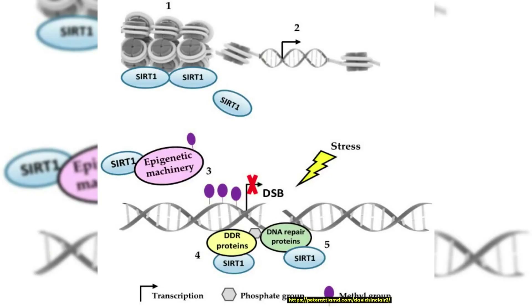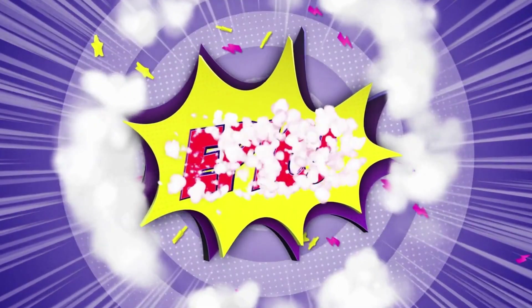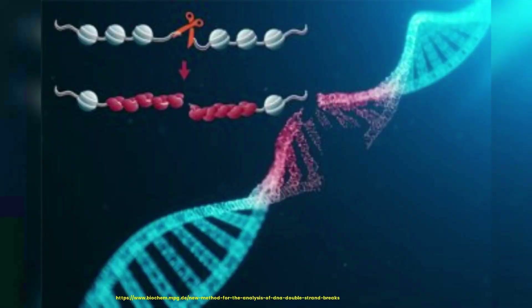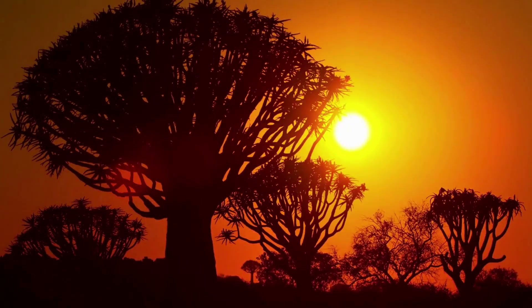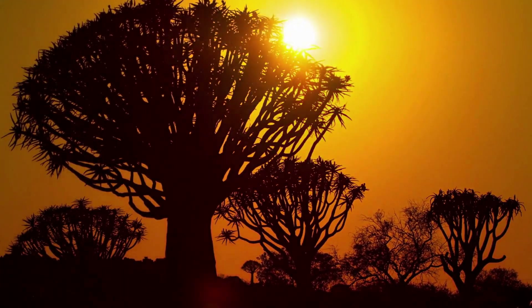Sinclair's ITA builds on these previous theories with an epigenetic twist — epic, get it? Sinclair's theory argues that one of the root causes of aging is specific DNA damage called double-stranded DNA breaks. Trillions of double-stranded DNA breaks occur in our bodies every day.